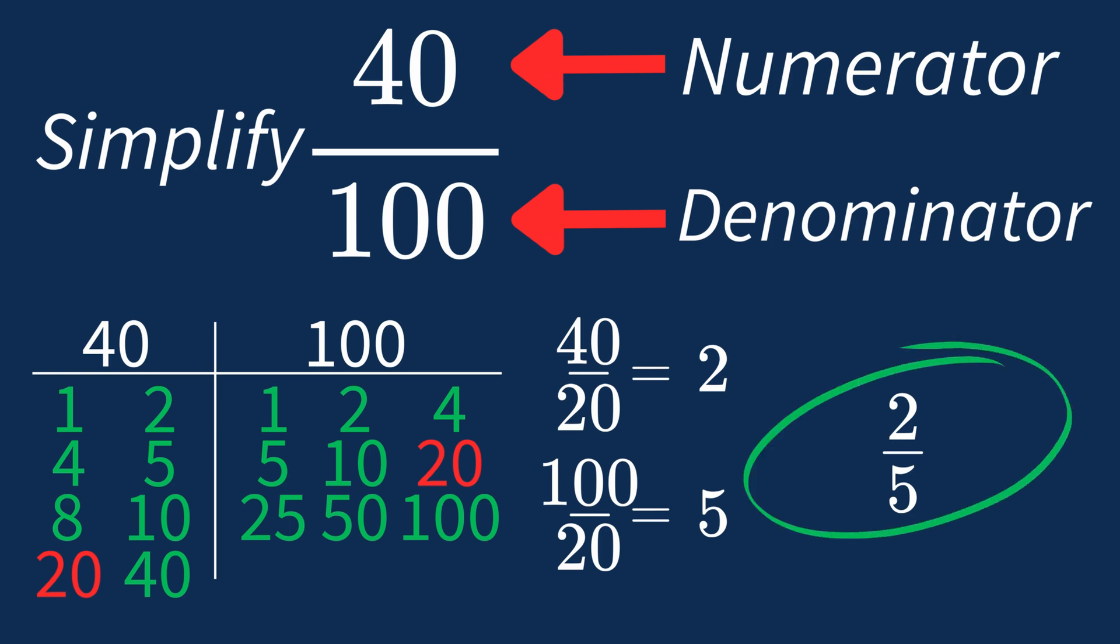And we know that 2 over 5 is in its simplest form, because the only common factor between 2 and 5 is 1. And when 1 is the largest common factor, we know that fraction is already in its simplest form.